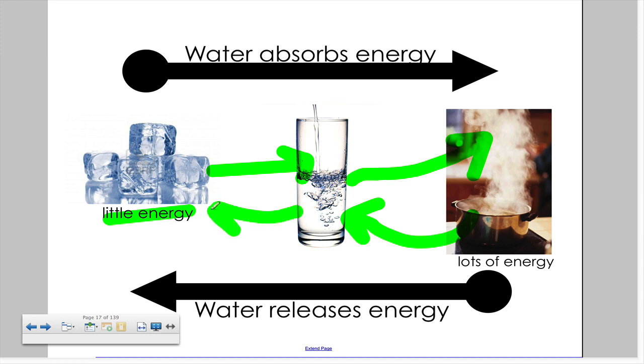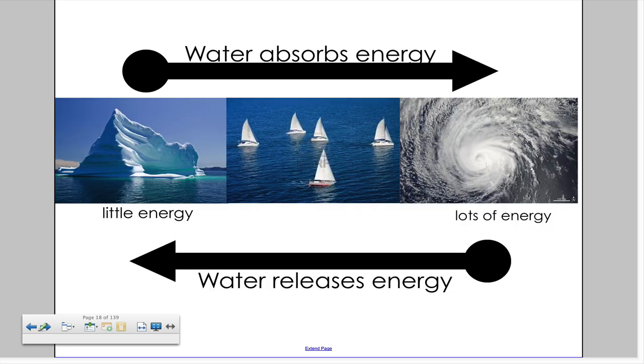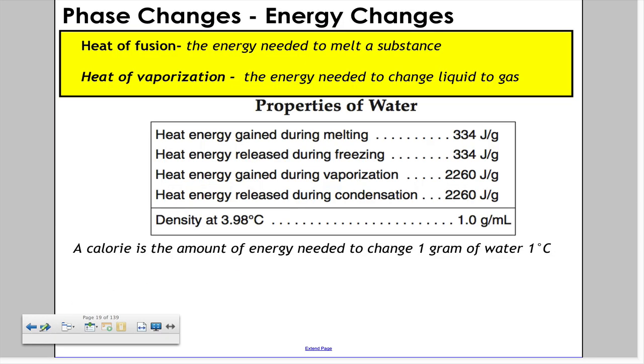Here's the exact same idea, but instead of in your kitchen, it's on Earth. We have ice, liquid water, and then water as a gas, shown here as a giant cloud or hurricane.